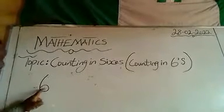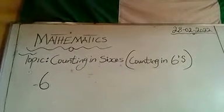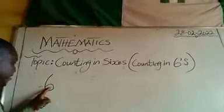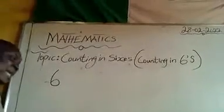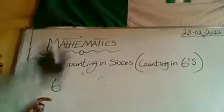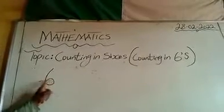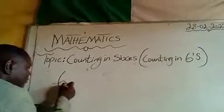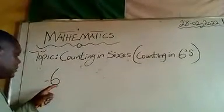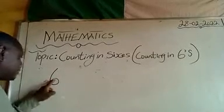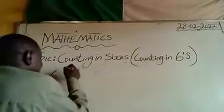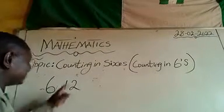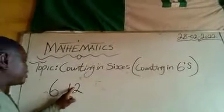First of all, six will be given. As you can see, six is given. You are to add six to this six in order to have the next number. When I add six to this six, the answer is twelve. When I add six to this twelve,